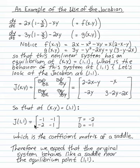At (1,1), you just insert 1 and 1 for x and y, and you can reduce that matrix to negative 1, negative 1, negative 2, negative 1.